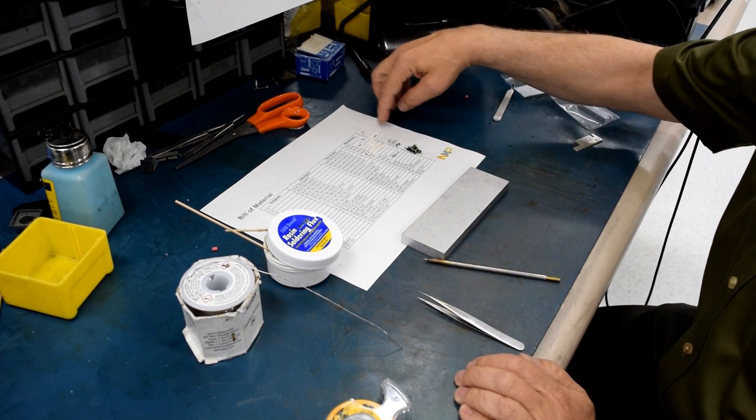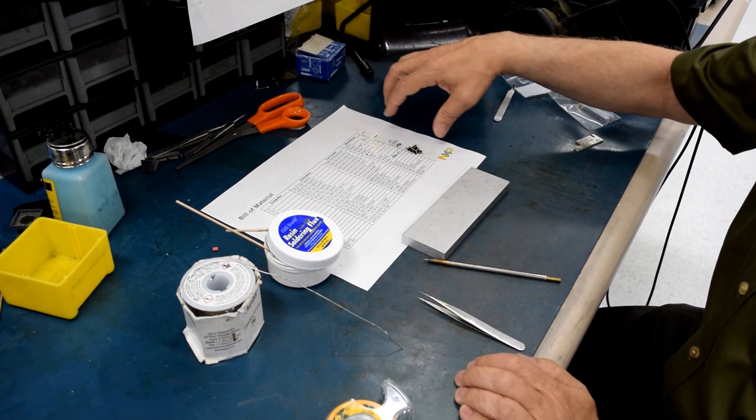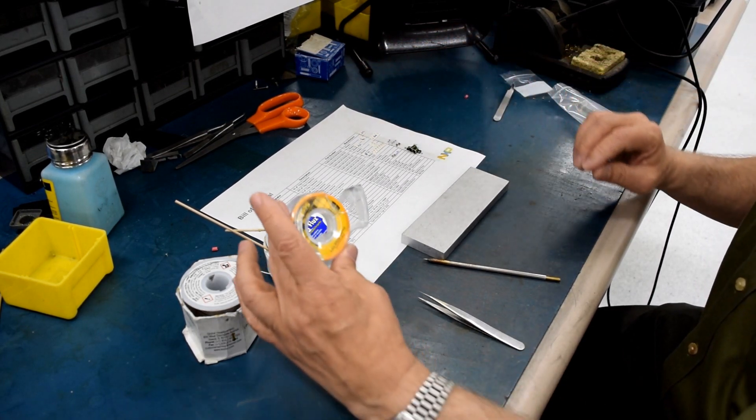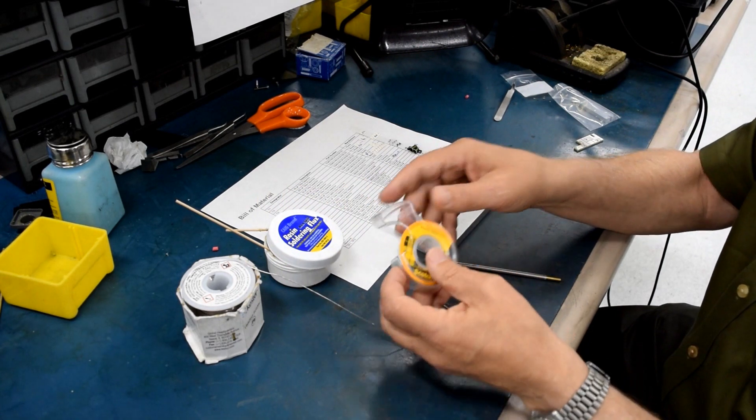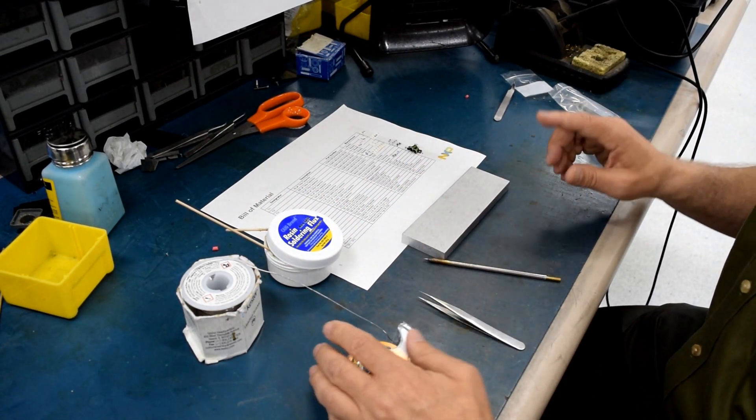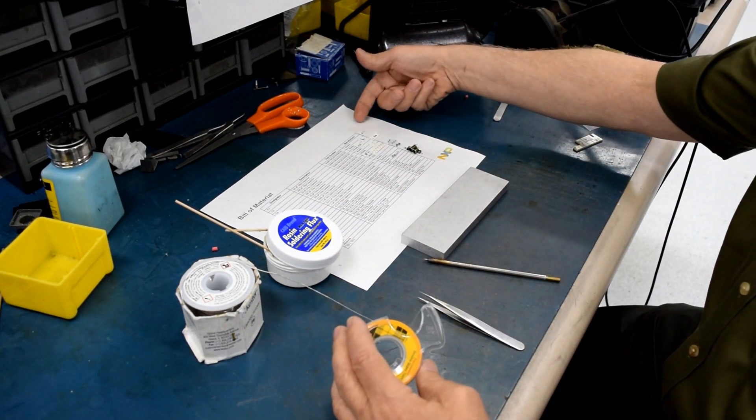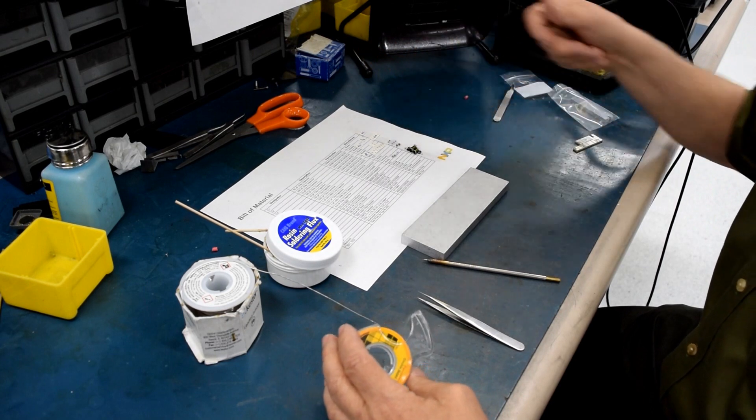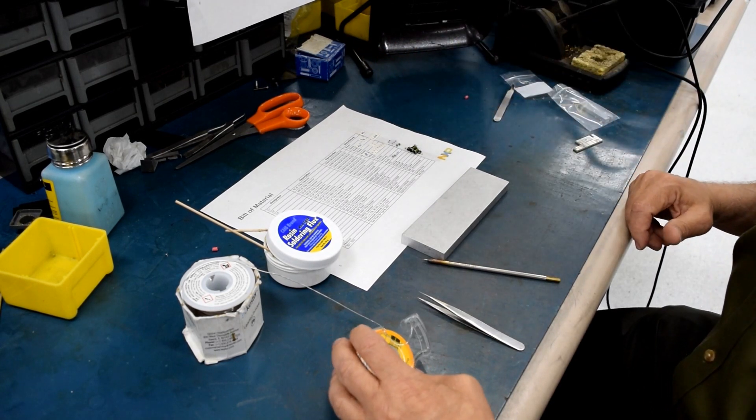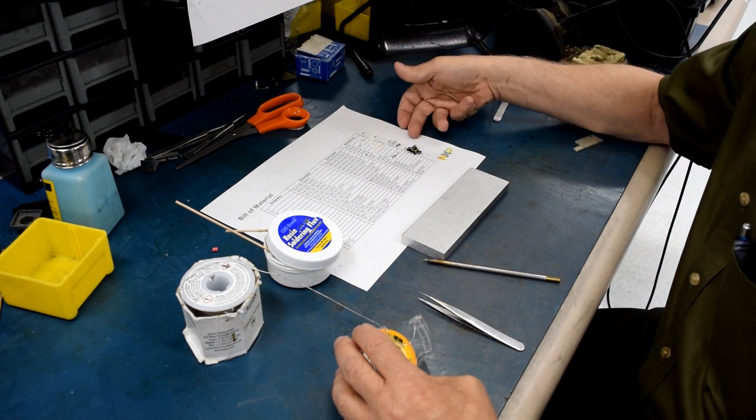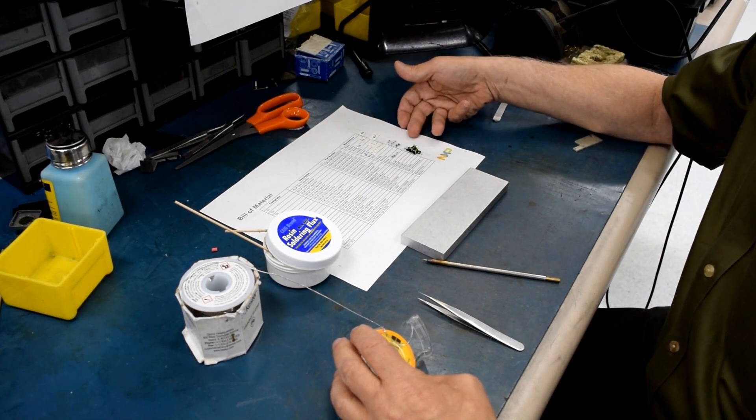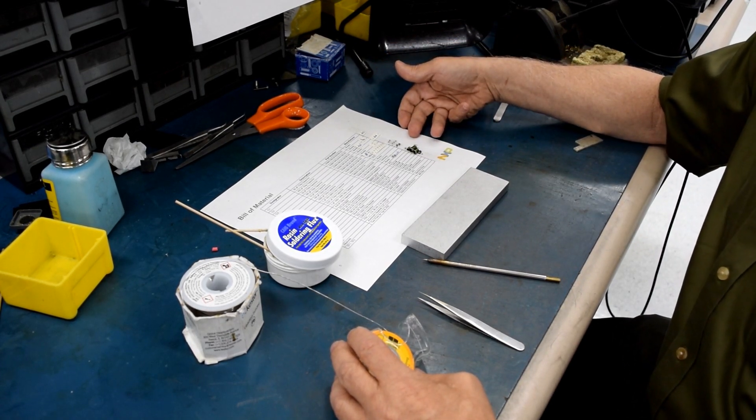One of the tricks that we use is to use double-sided tape and attach it to the bill of materials and then stick the small surface mount components to that right beside their entry on the bill of materials list. This makes it easier when you're doing the assembly itself to find the correct component.